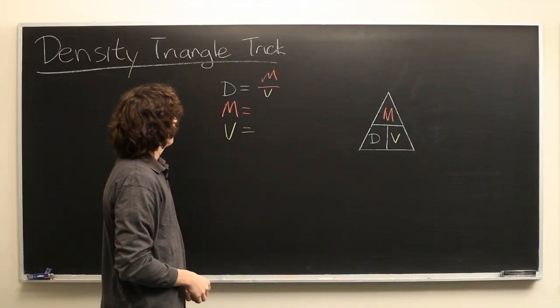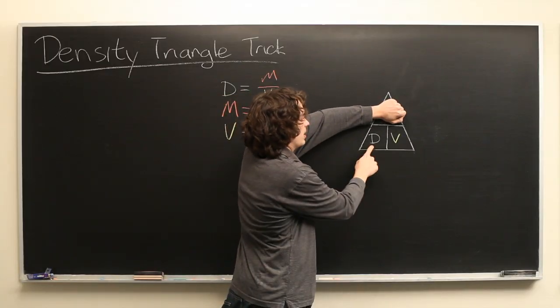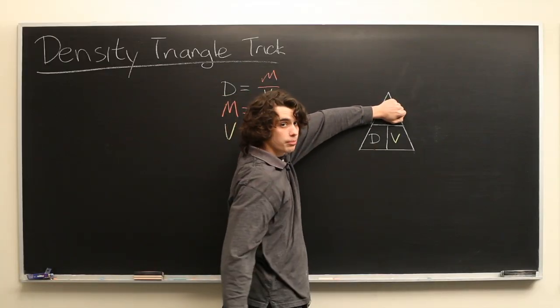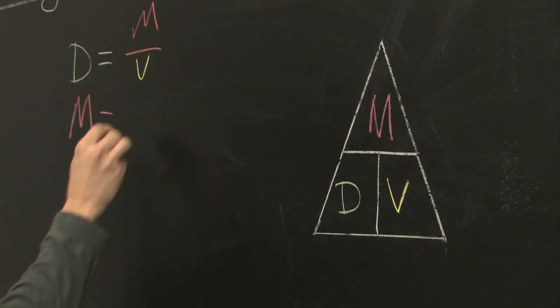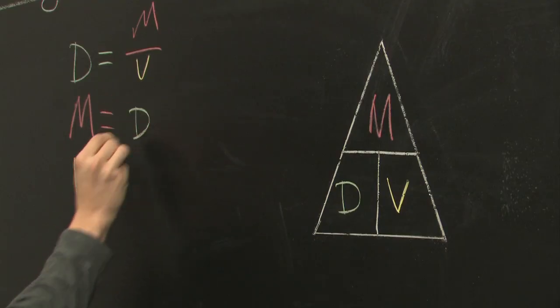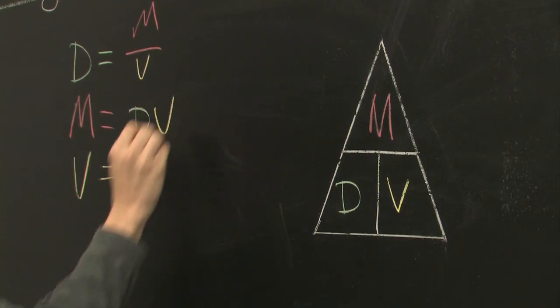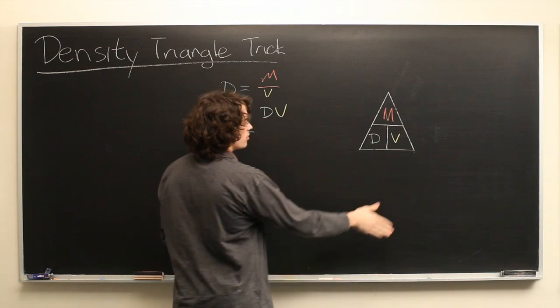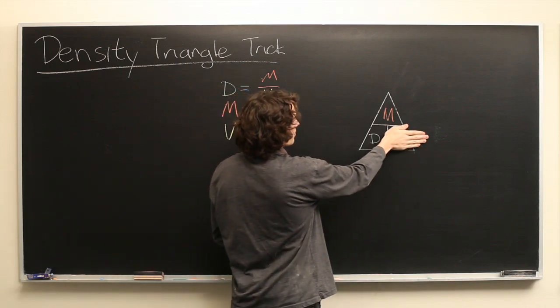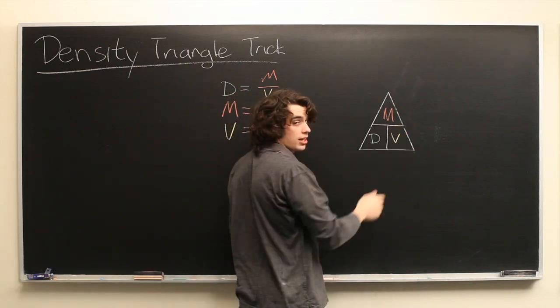If we want to know mass, we simply multiply density times volume: D times V. And finally, if we want to know volume, simply cover that up, and we see we have M over D.